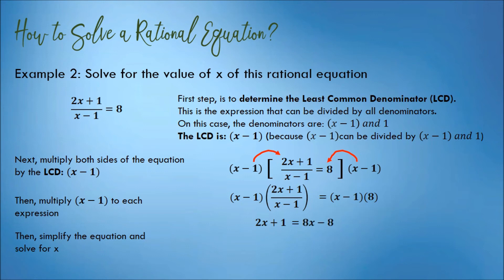Simplify further. Combine like terms if there is. Transpose negative 8 to the left, so it can be combined with 1. Transpose 2x to the right, so it can be combined with 8x. That is, 1 plus 8 is equal to 8x minus 2x.